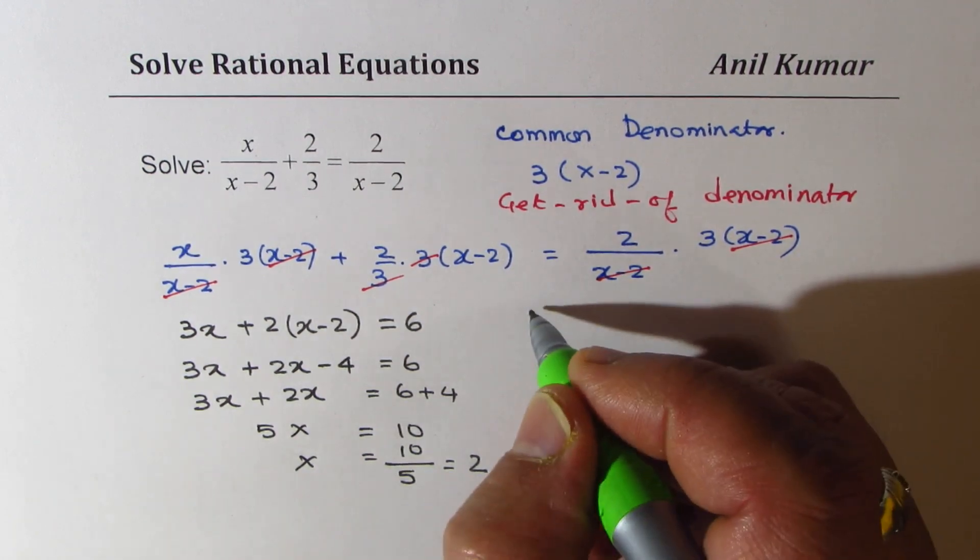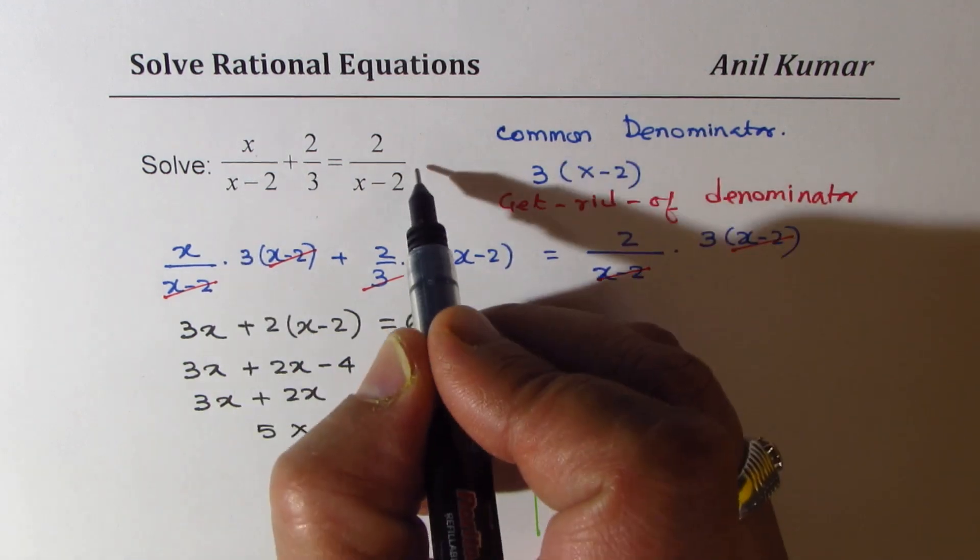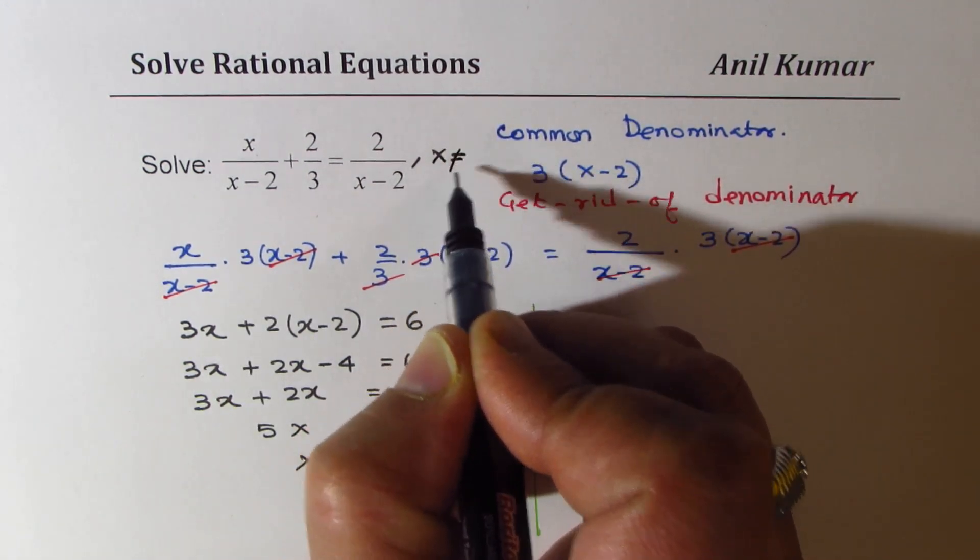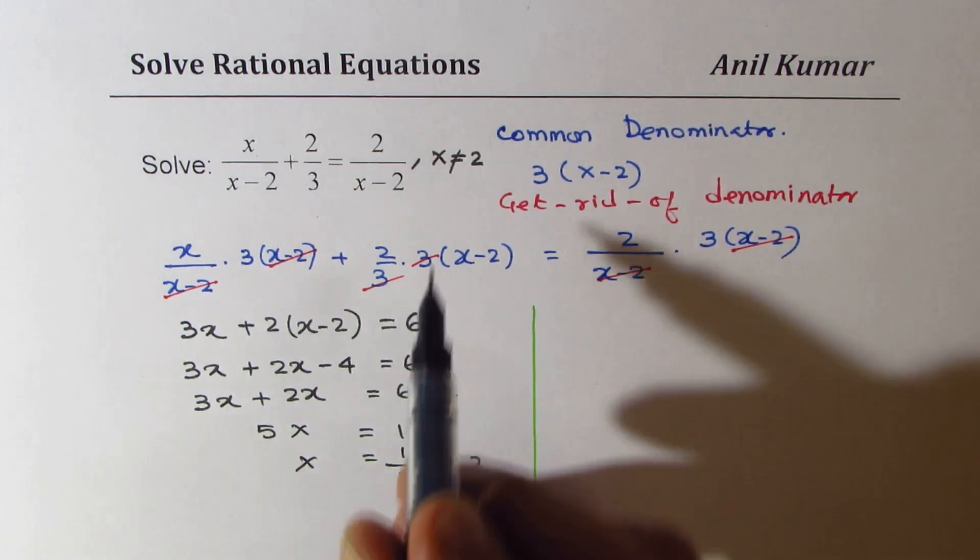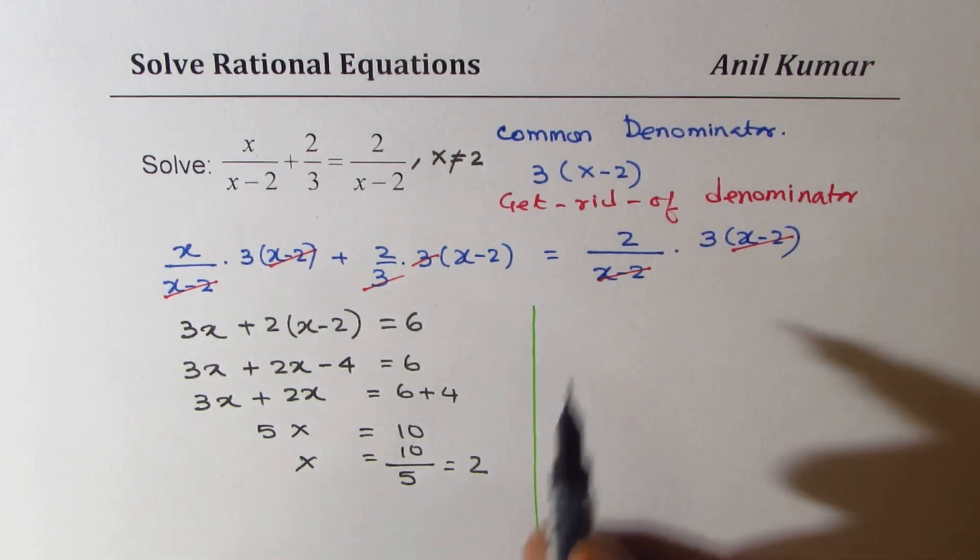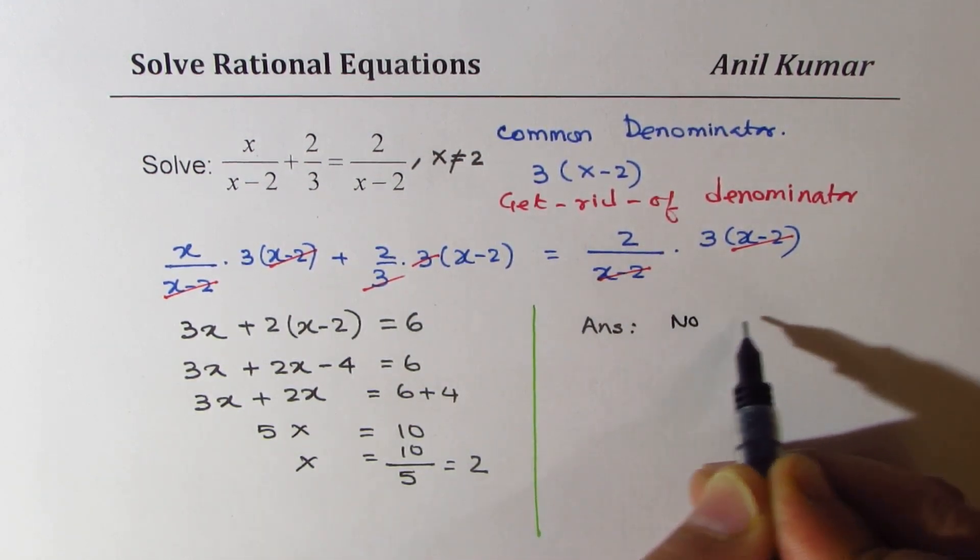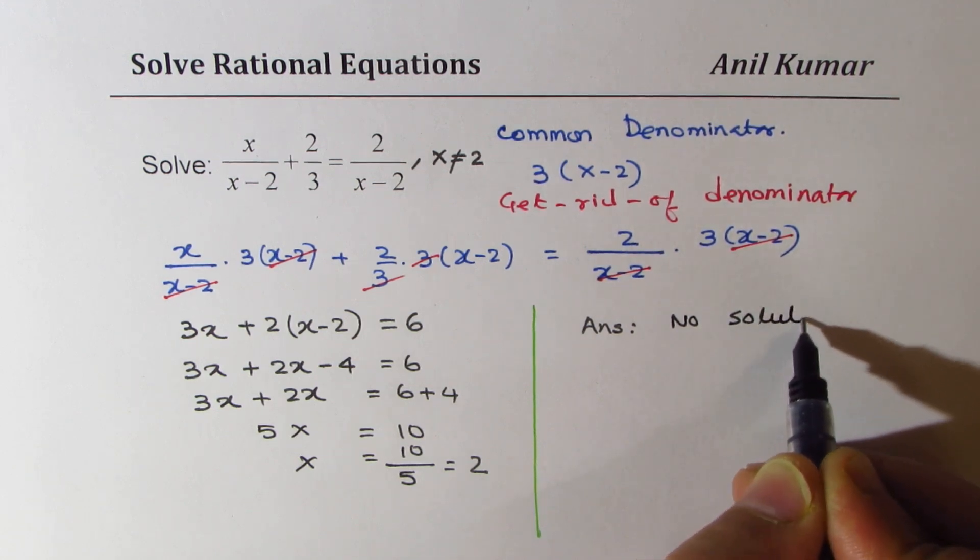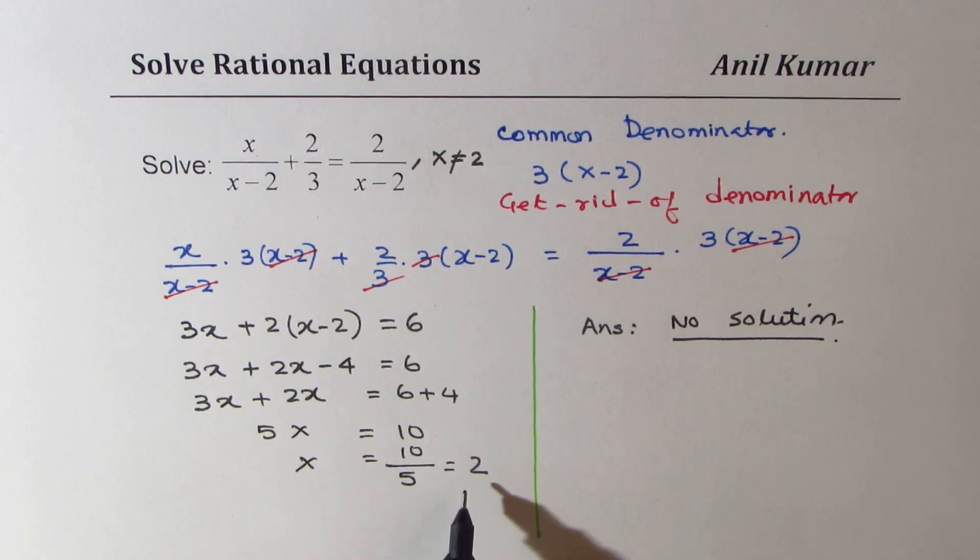So it is important to see here that in the given equation, x is not equal to 2. Now, the solution which we get is x equals to 2, which is not a valid solution. Therefore, the answer is no solution. So this equation does not have any solution.